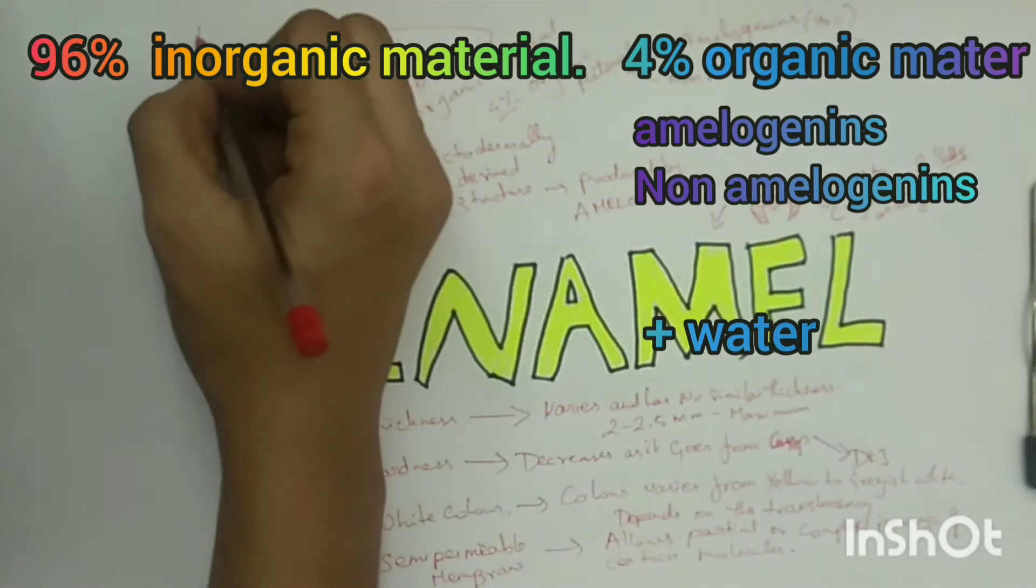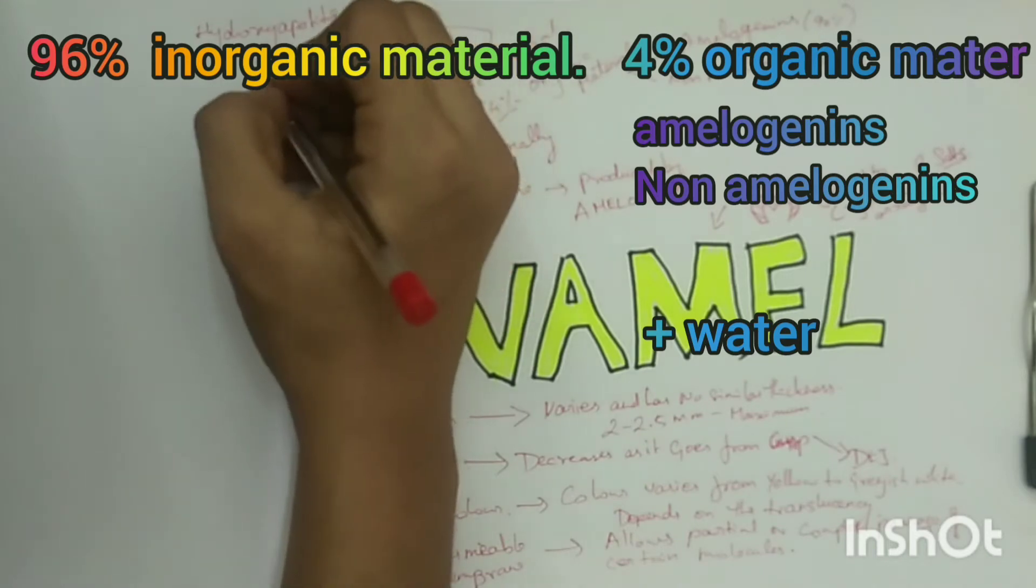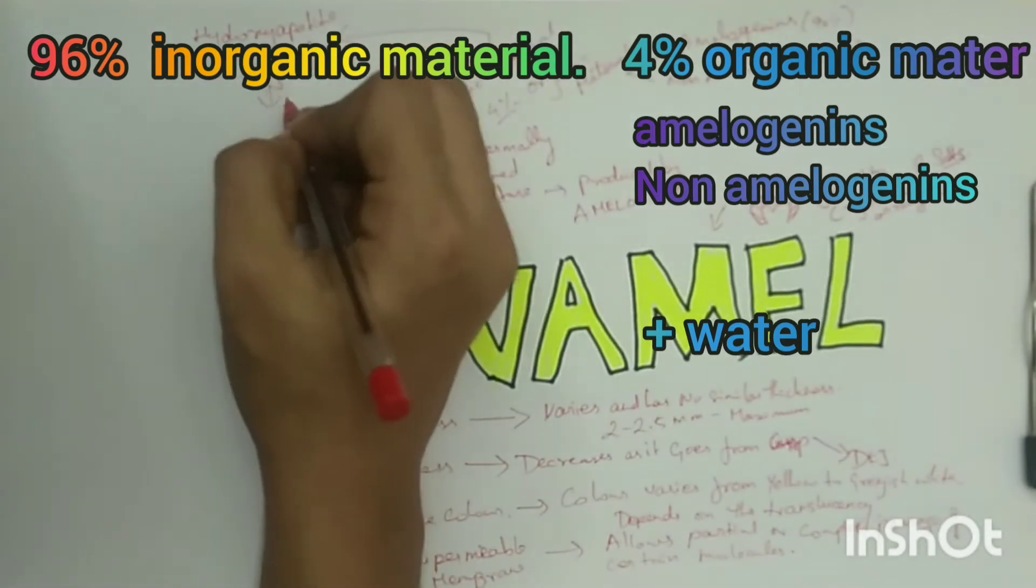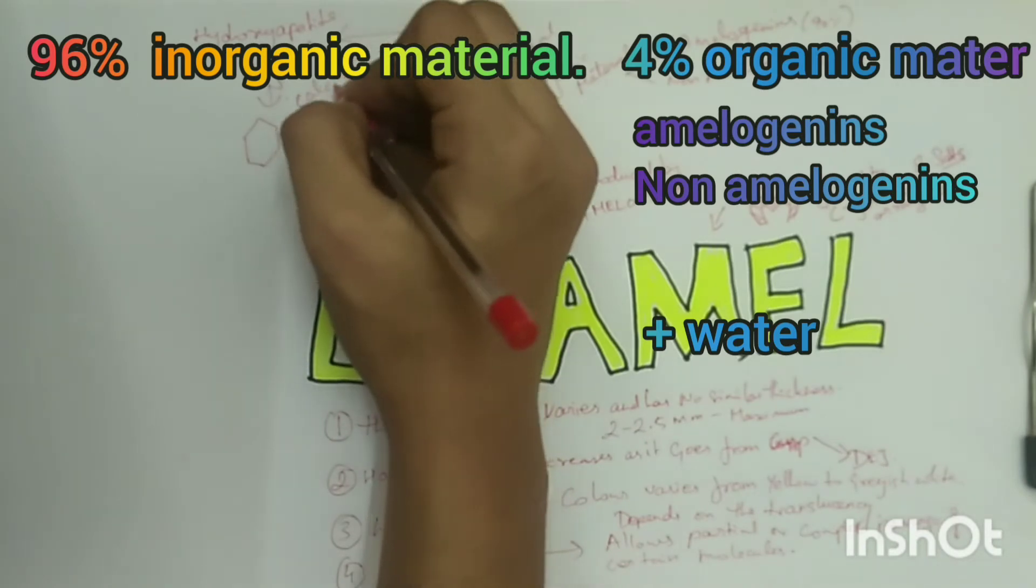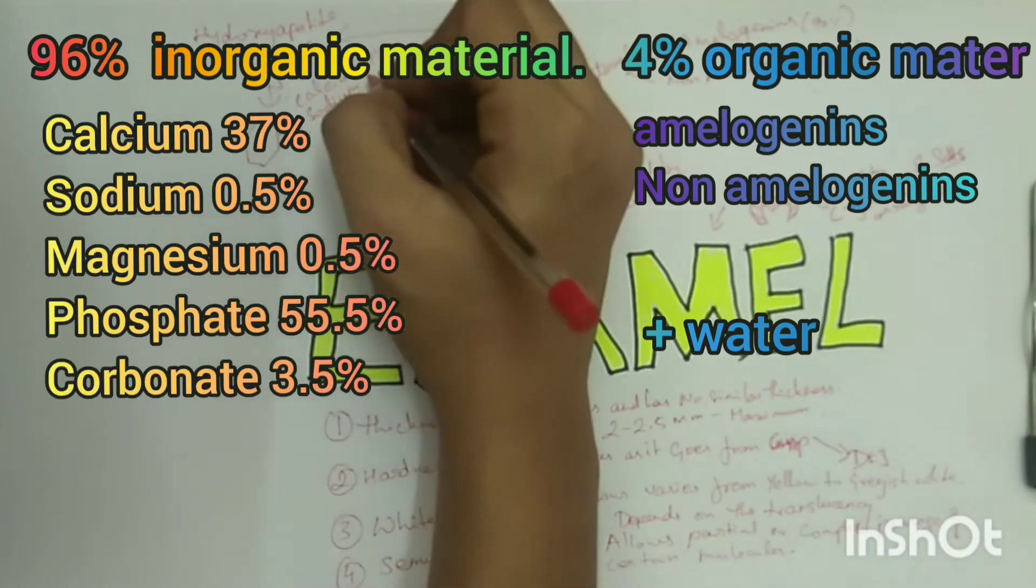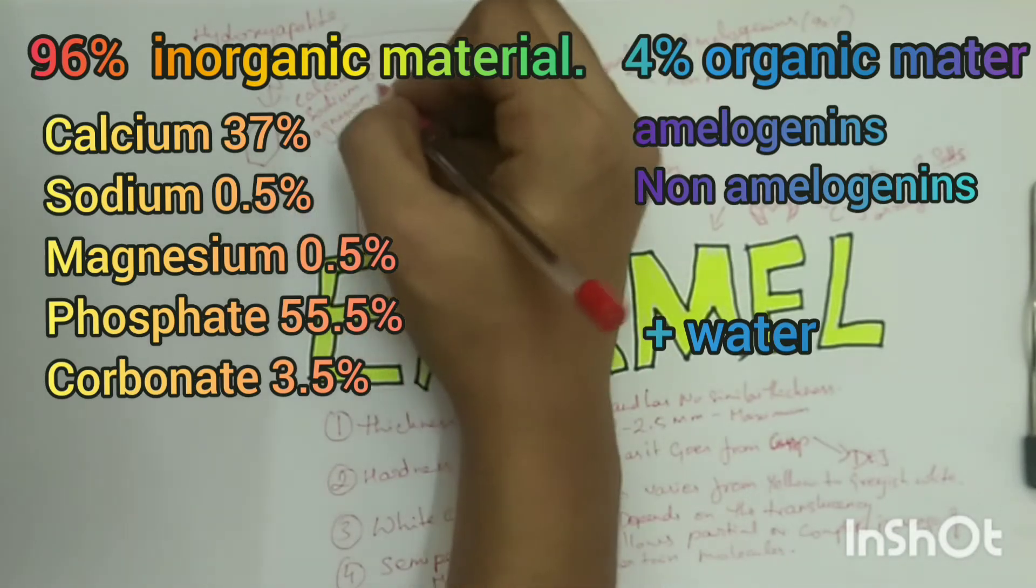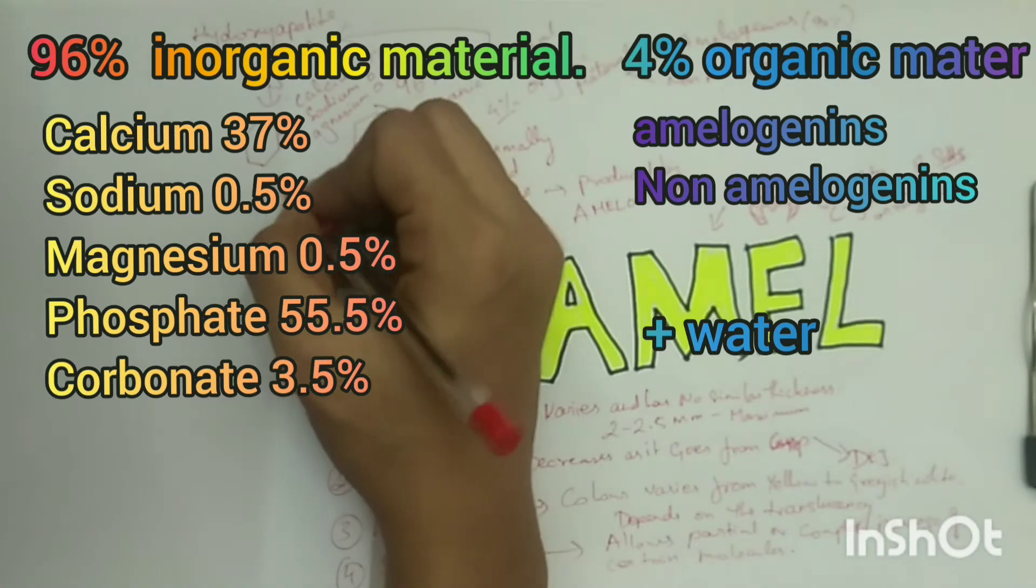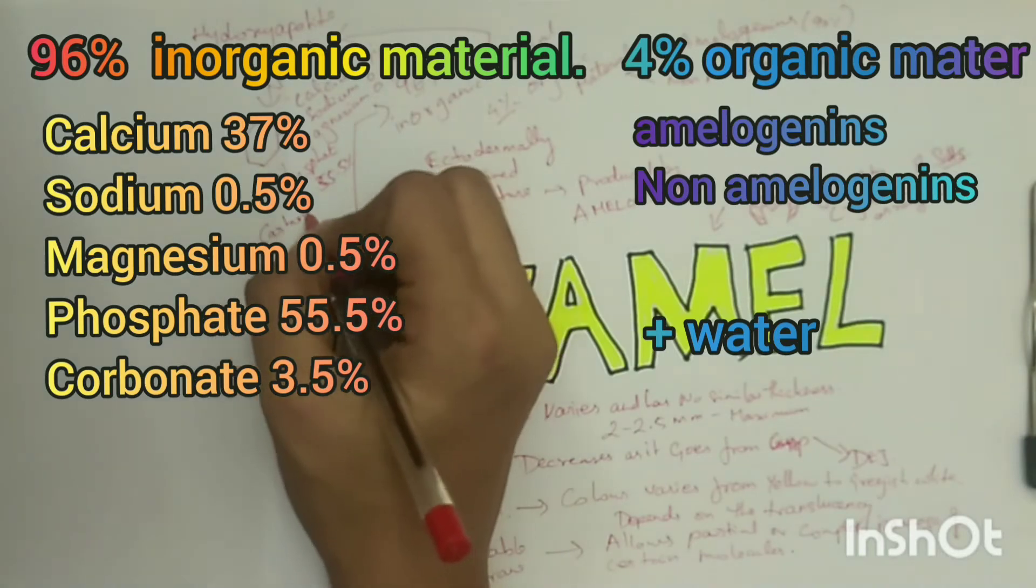The inorganic components of enamel are hydroxyapatite crystals which are hexagonal in cross section and have the following approximate composition: calcium 37%, sodium 0.5%, magnesium 0.5%, phosphate 55.5%, carbonate 3.5%.